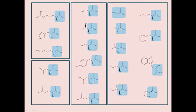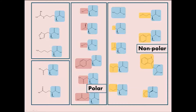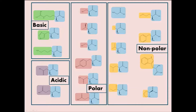The different side chains of amino acids allow for four unique amino acid classifications. The blue box represents the consistent feature of each amino acid — the carboxyl group, amino group, and hydrogen atom. The four categories of amino acid side chains are nonpolar amino acids, polar amino acids, acidic amino acids, and basic amino acids.